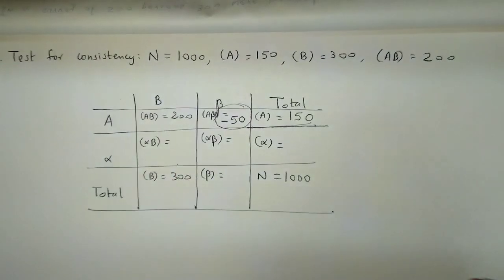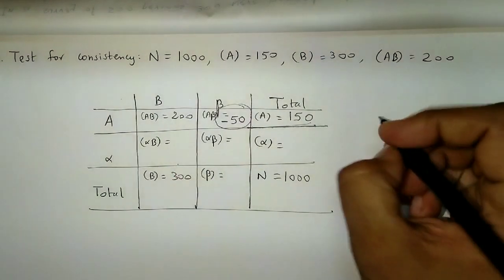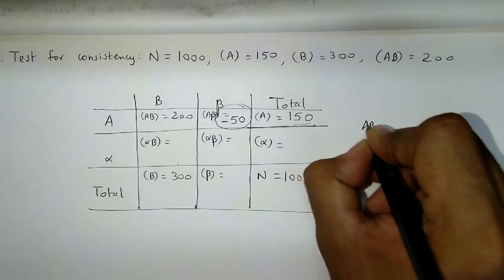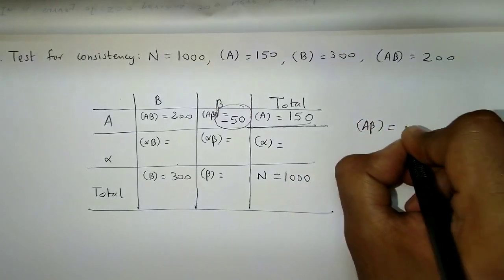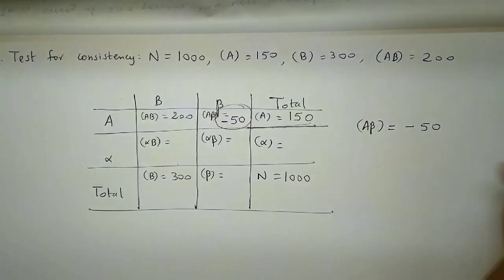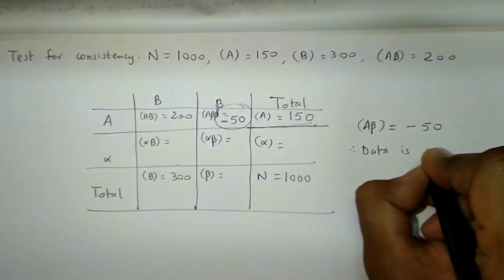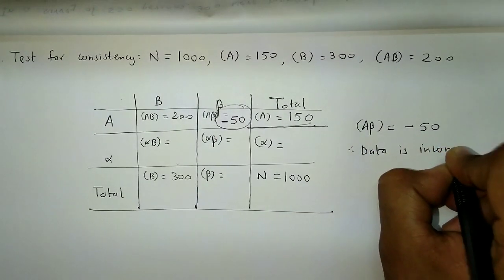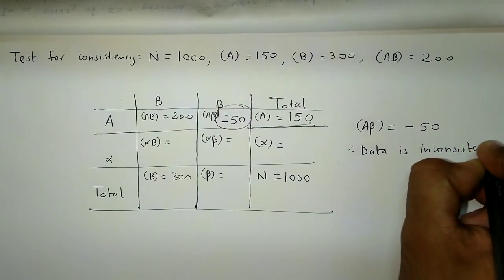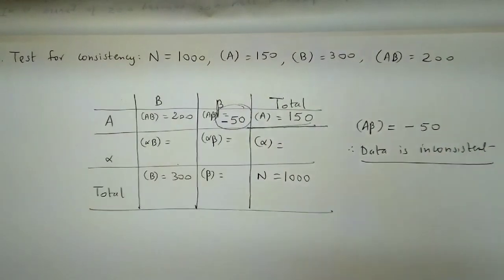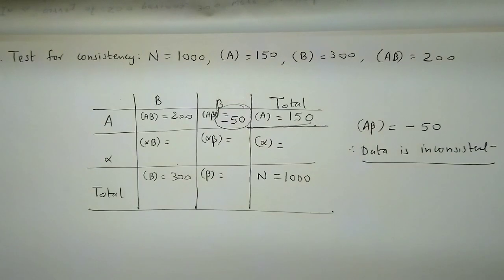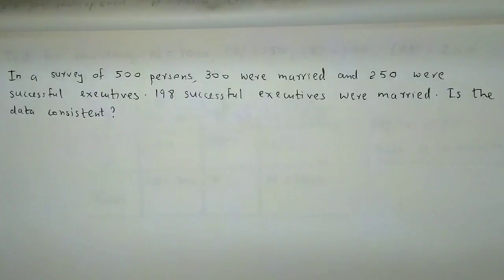Hence, the given data is inconsistent. The reason: as the frequency of A-beta is minus 50, therefore the given data is inconsistent. Using the 9-square table, we can easily verify whether data is consistent or not. Let's take another example related to consistency.